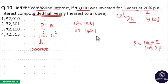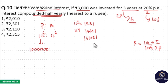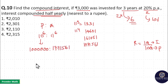Now 11 raised to 5 is 161051. Then 11 raised to 6 is 1771561.